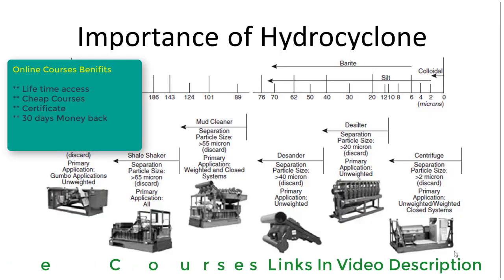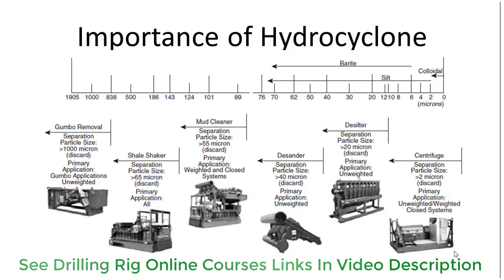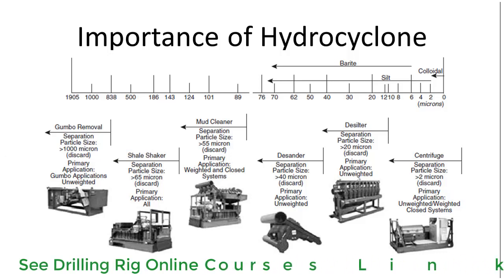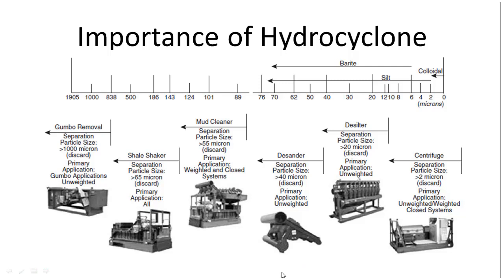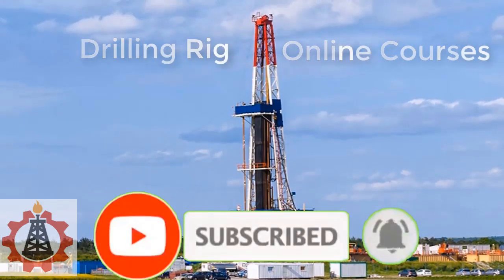What is the importance of the hydrocyclone when we already have the shale shaker, a number of shale shakers, and a centrifuge as well? Then why do we need the desander and desilter hydrocyclone?